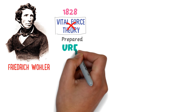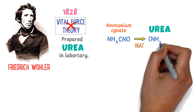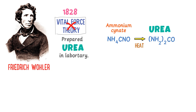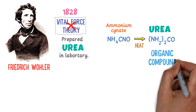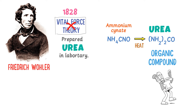He prepared the first organic compound — urea. He took ammonium cyanide and, after heating, it converted to urea. Urea is an organic compound found in the waste products of living organisms like human beings. Note that this is the first chemical reaction of an organic compound.